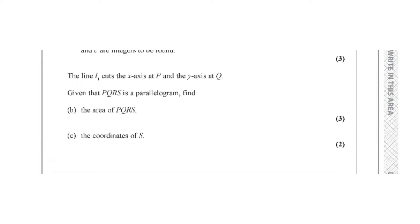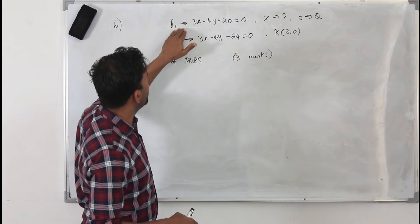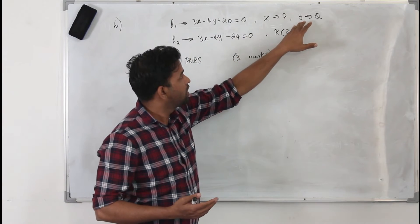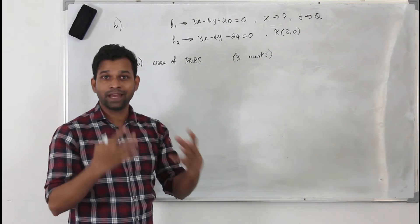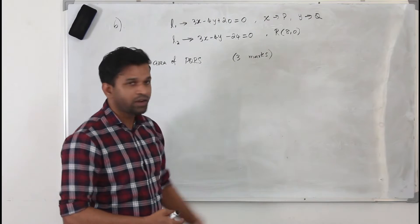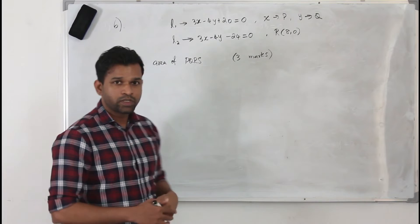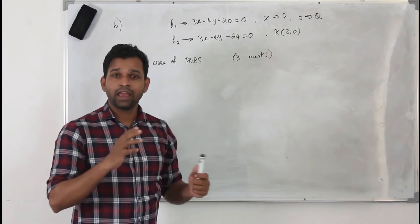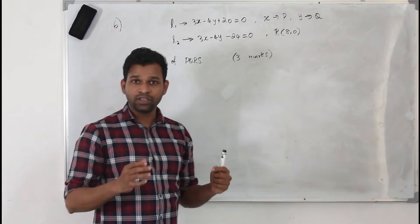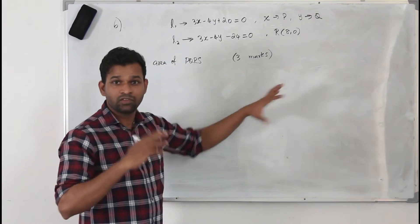Moving on to Part B. The line L1 cuts the x-axis at P and the y-axis at Q. Given that PQRS is a parallelogram, find the area of the parallelogram — this carries 3 marks — and then find the coordinates of S in Part C. Before solving, I always advise drawing a rough diagram; there are no marks for it, but it makes your work much easier.